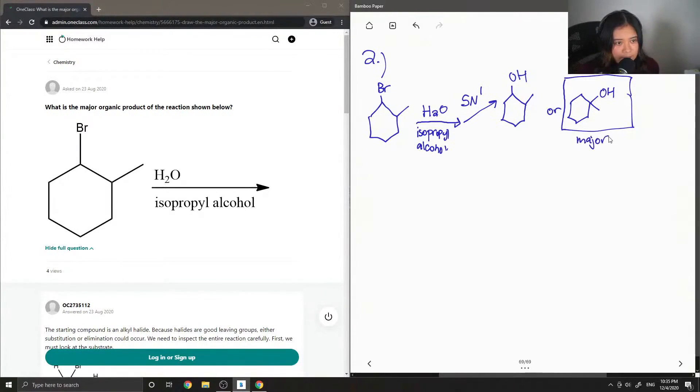And I'll write down the mechanism for both of these below. But the second product that you could get is through elimination, and basically this is when a double bond is formed.